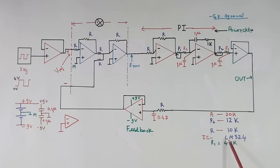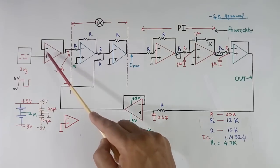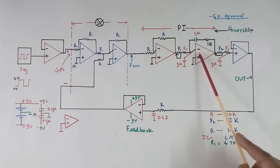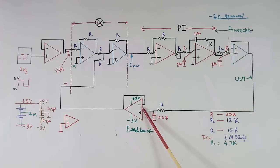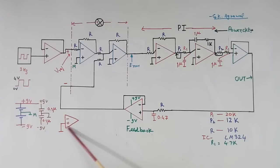I have used 2 LM324 ICs. Each IC has 4 operation amplifiers, so total 8. But here I have used 7, so 1 will be spare. This spare one — for that, the plus terminal we will ground.